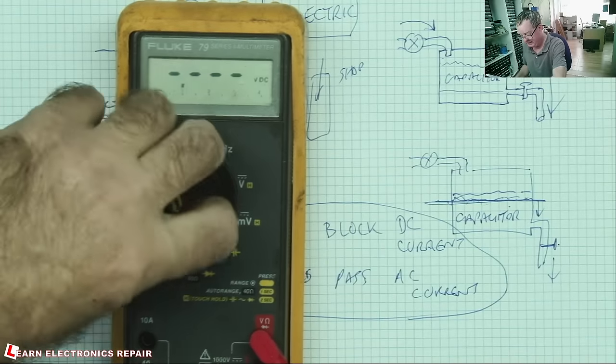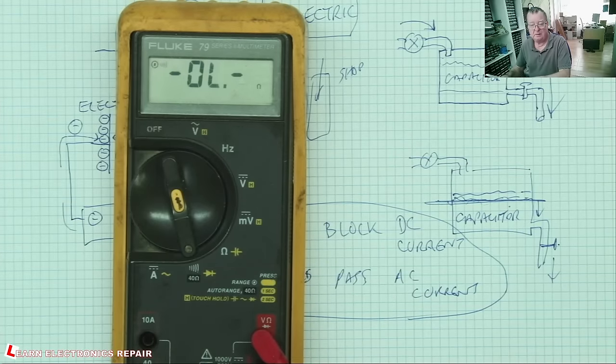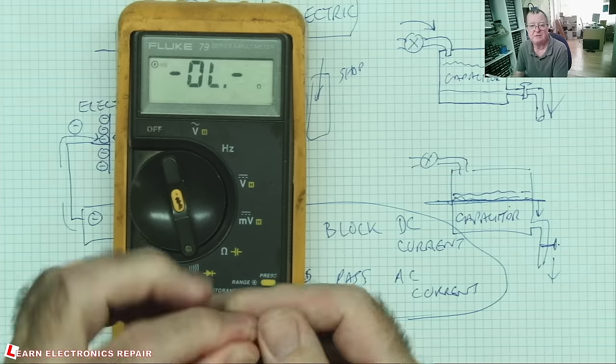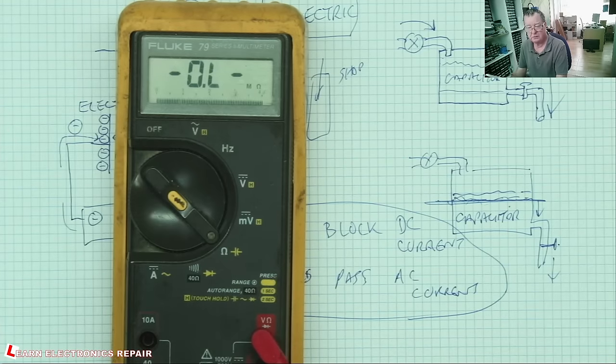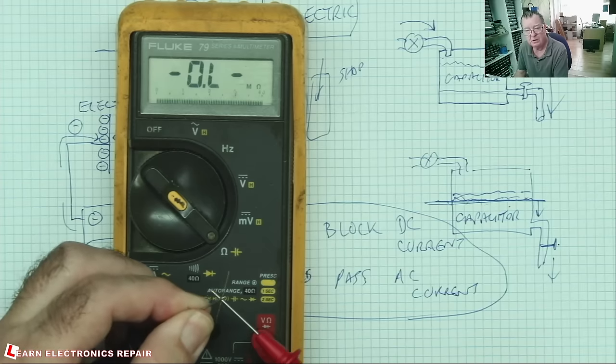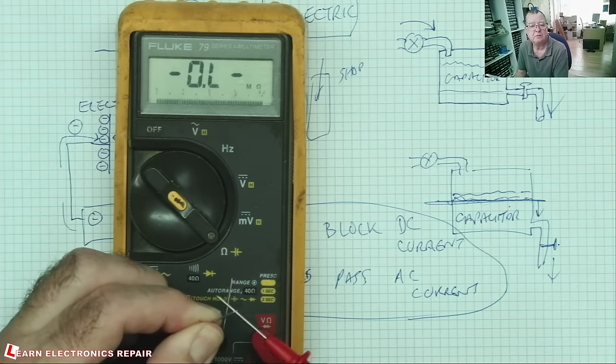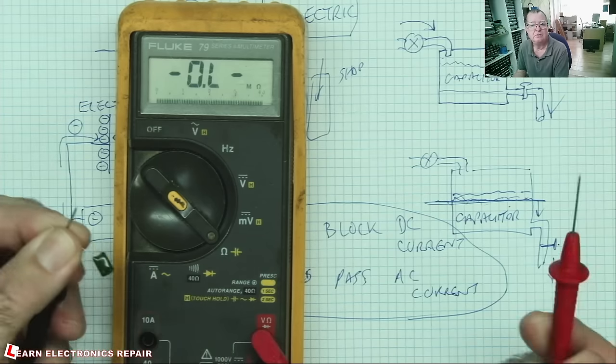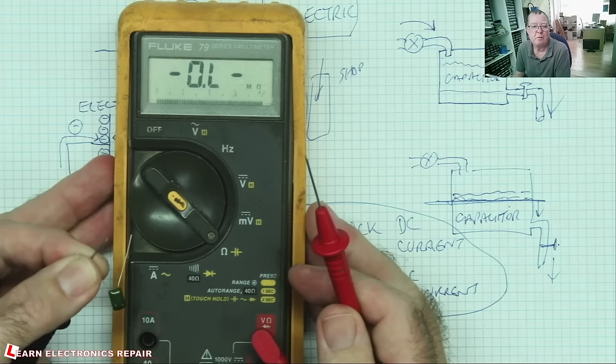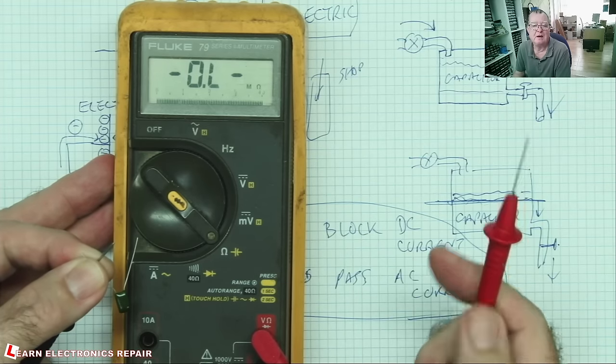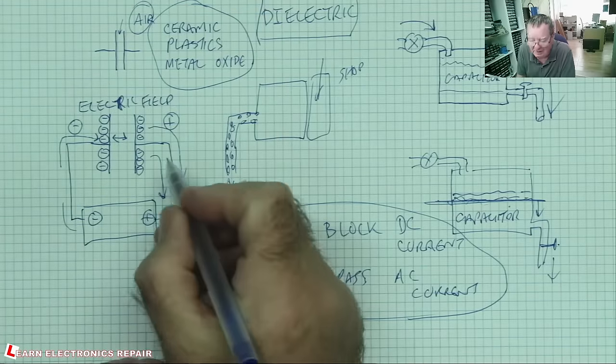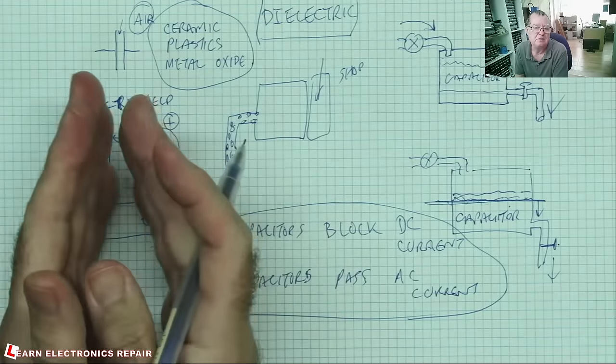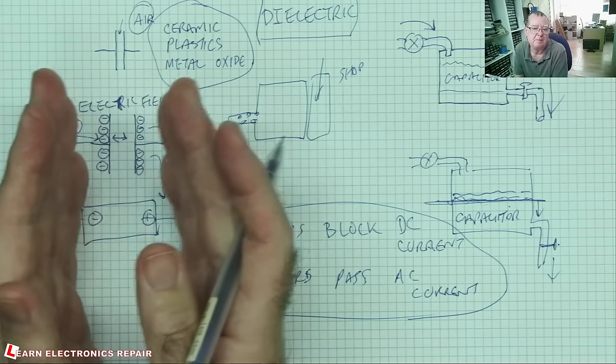But if I take my multimeter, which admittedly is using DC, and I take my capacitor and I go to resistance range, you'll see that my capacitor is totally open circuit. So regardless of whether the electrons are moving in one direction or moving in both directions, DC or AC, the electrons cannot flow across here. No current can actually flow through the capacitor in the sense that the electrons are coming out of here and going in here.